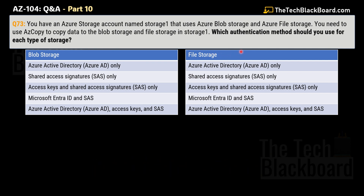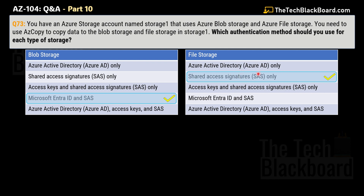For Blob Storage, the options are: A) Azure Active Directory only, B) Shared Access Signatures only, C) Access Keys and Shared Signatures only, D) Microsoft Entra ID and SAS, E) Azure Active Directory, Access Key, and SAS. The same options apply for File Storage. The correct answer for Blob Storage is Microsoft Entra ID and SAS. For File Storage, the correct answer is Shared Access Signatures only.